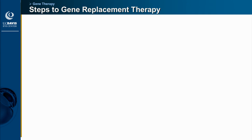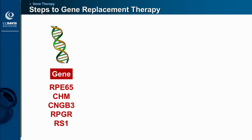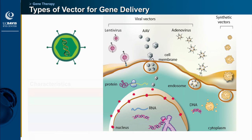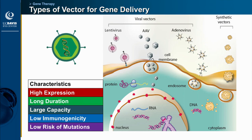When you have gene therapy, you start with a gene — which could be any gene mutated in a disease — but you also need a vector to carry it, and a delivery mode to deliver the vector to the eye. When we talk about vectors, we usually talk about viral vectors. The general characteristics you want are high, long-term expression, large capacity to hold big genes, low immunogenicity, and low risk of mutations.